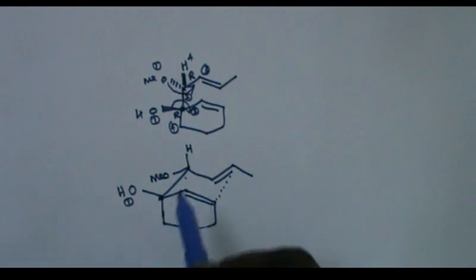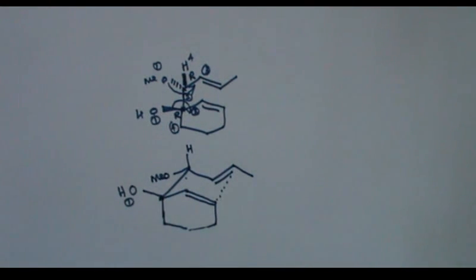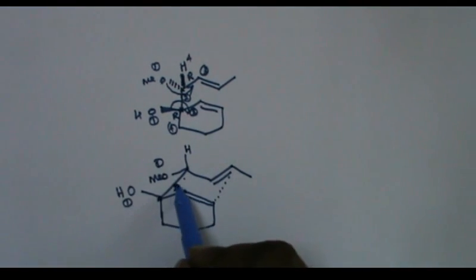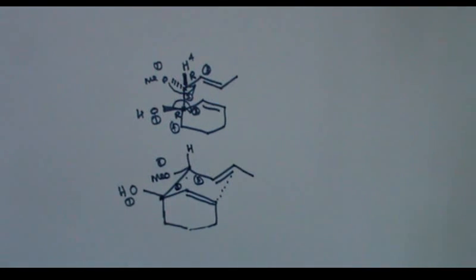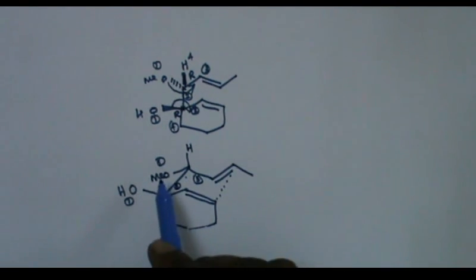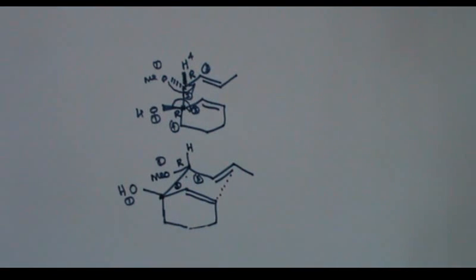I can give configuration for this and I can check whether whatever I have done is correct or not. For example, higher priority first one, second, third. Since I need to look from here, it will be R. So it is correct.